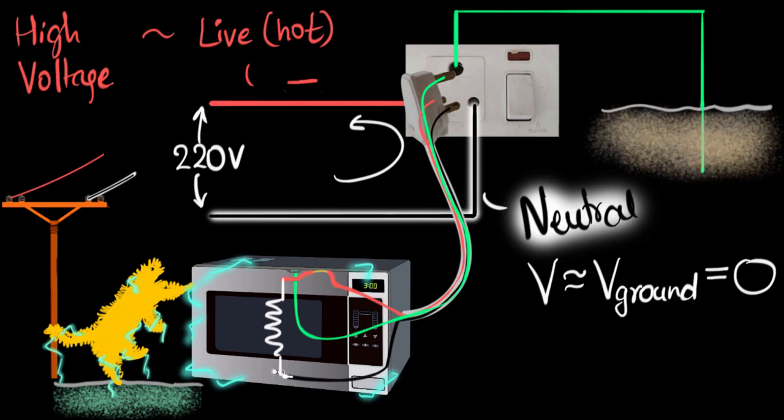And so this third wire is often called, no surprise, ground wire, or the earth wire.